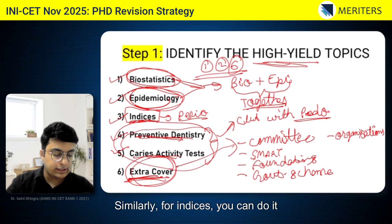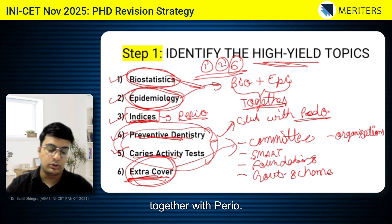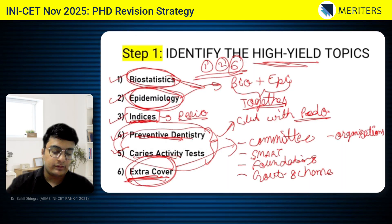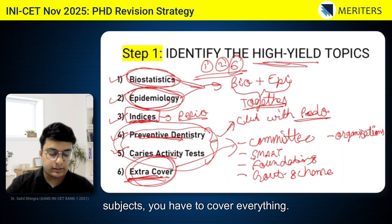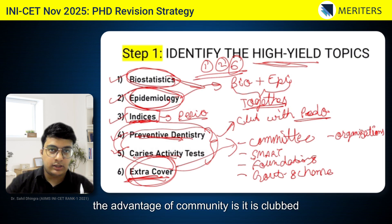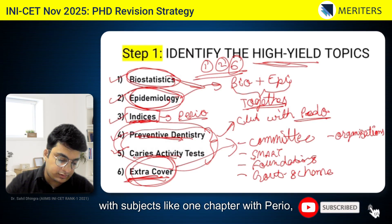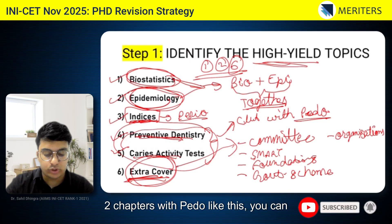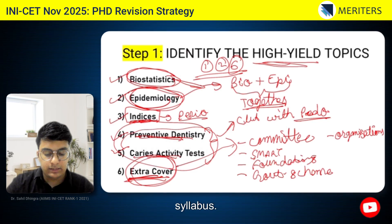Similarly, for indices, you can do them together with perio. Community dentistry is a very factual subject. The strategy is to cover all six topics — you cannot leave anything. But the advantage is that one chapter can be clubbed with perio and two chapters with pedo, so you can integrate the syllabus efficiently.